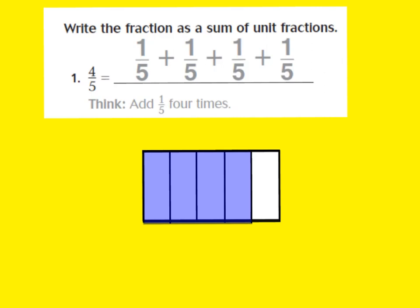Let's look at number one. Number one says write the fraction as a sum of unit fractions. If we look at our fraction models here, we see that we have four-fifths. That's what my model is showing me, because I have five equal pieces and I have four of those pieces shaded in. So I have four-fifths. If I want to write it as a sum of unit fractions, that just means I'm going to break it up into different fraction amounts and make it into an addition problem.